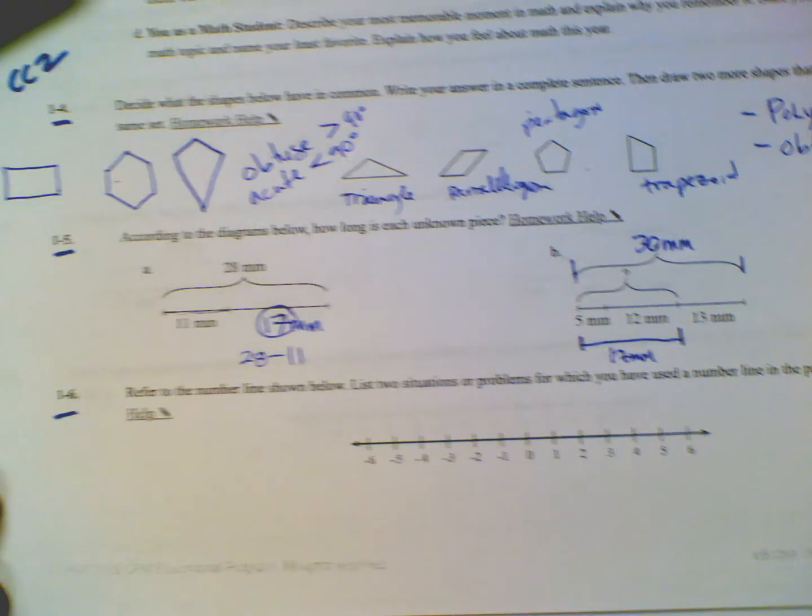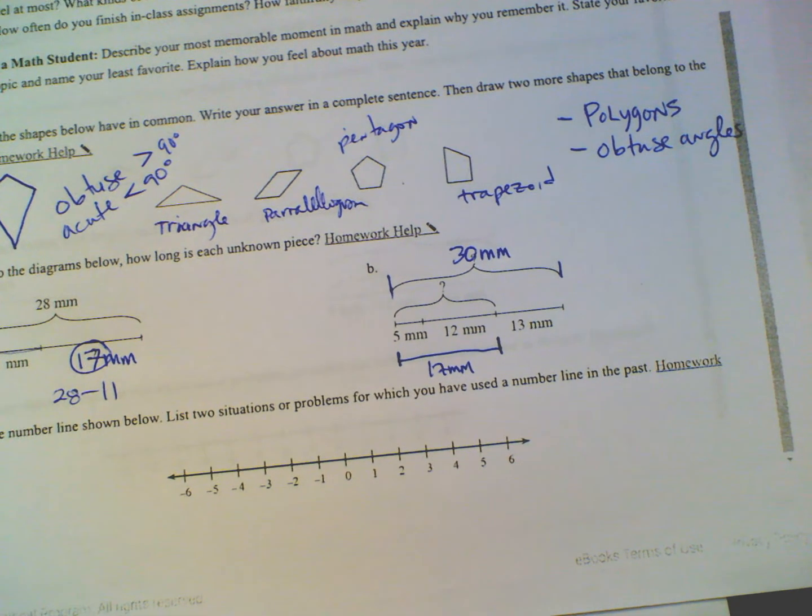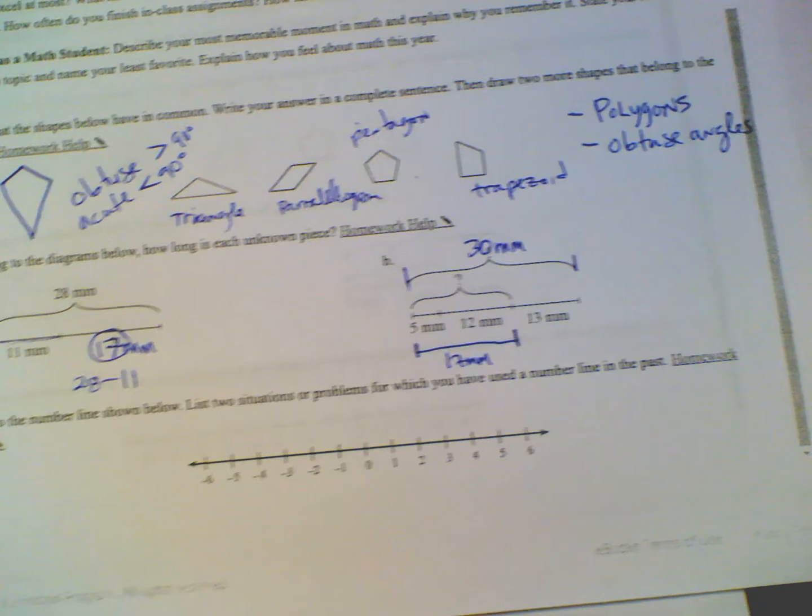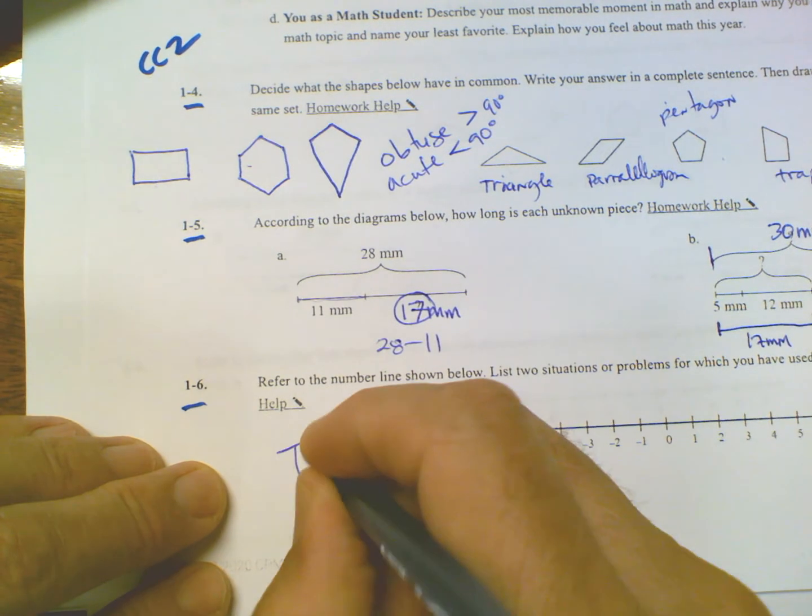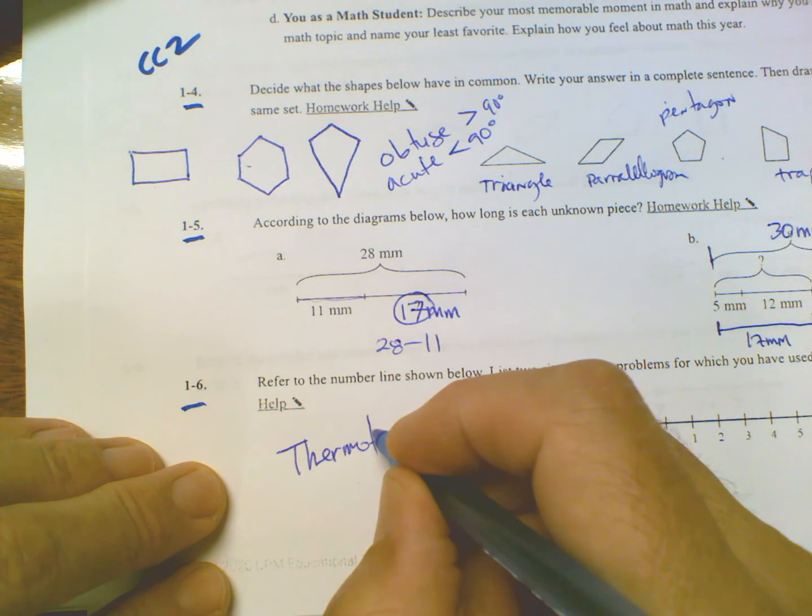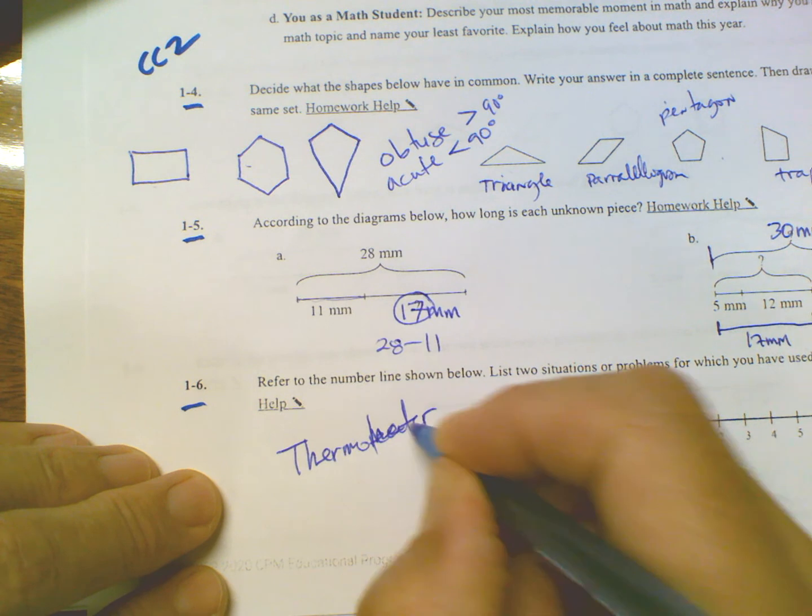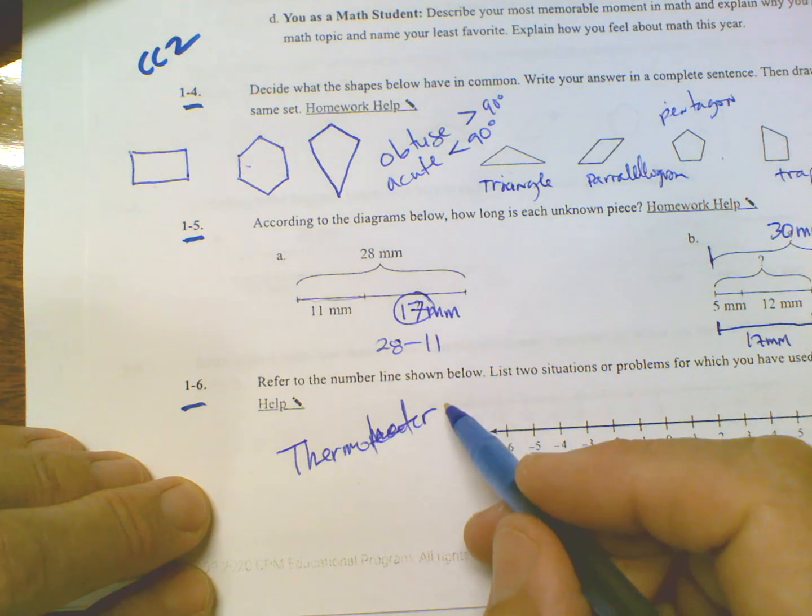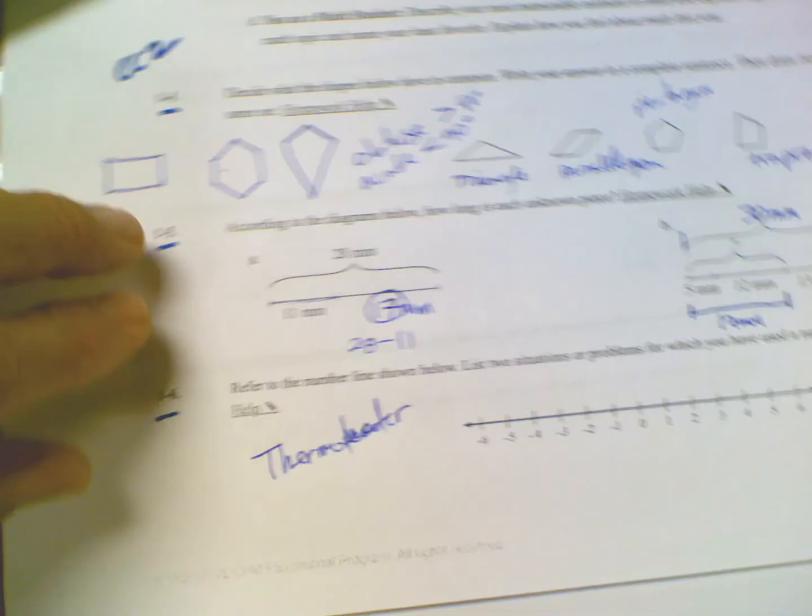The last one asks us to refer to the number line shown below and list two situations or problems for which you have used a number line in the past. Well, an interesting thing with number lines is - I think of a thermometer. A thermometer is a number line. It has those same characteristics. If we turn that number line that way, you could actually see it as a temperature gauge with positive and negative temperatures.